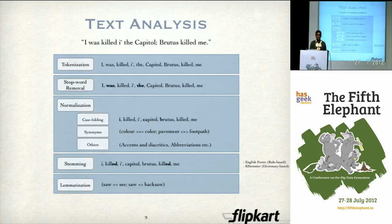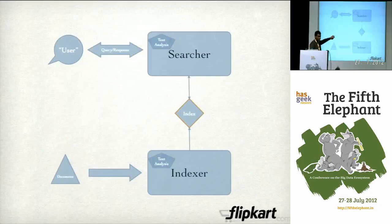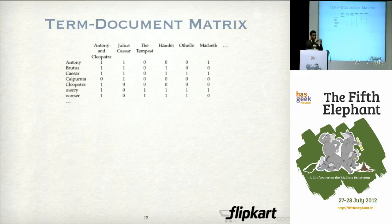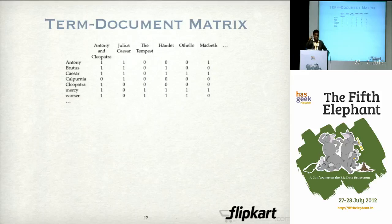Search engine matching is in general very fuzzy — very different from the matching in databases. In a database, either a row or document matches a query or it does not. It is not so in search engines; it is a very fuzzy match. One simple way of thinking about an index is to think of it as what we call a term-document matrix. Imagine a matrix of 1s and 0s, where the rows represent terms — that is, words — and the columns represent documents. Whenever a particular term occurs in a document, at the corresponding position where the row and column intersect, there is a 1, and there is a 0 everywhere else.